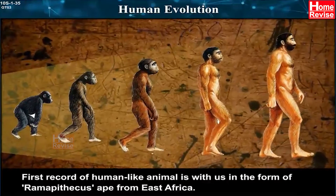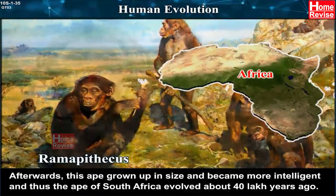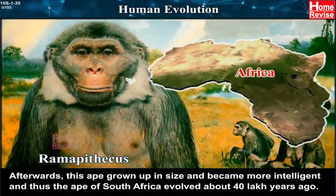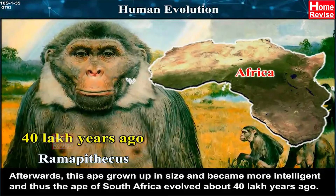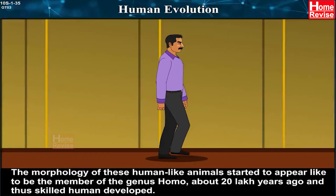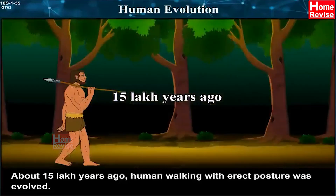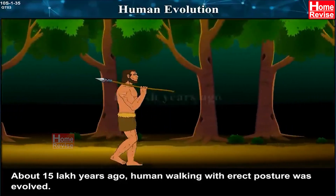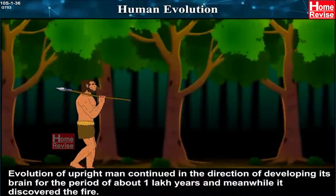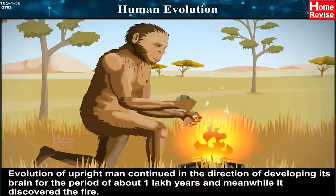The first record of a human-like animal is with us in the form of Ramapithecus ape from East Africa. Afterwards, this ape grew up in size and became more intelligent, and the ape of South Africa evolved about 40 lakh years ago. The morphology of these human-like animals started to appear like members of the genus Homo about 20 lakh years ago, and thus skilled humans developed. About 15 lakh years ago, a human walking with erect posture was evolved, and may have existed in China and Indonesia. Evolution of upright man continued, developing its brain over about 1 lakh years, and meanwhile it discovered fire.